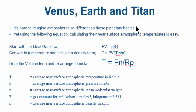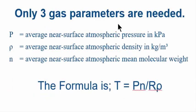So to get the near-surface average temperature of these three planets, or any other planet with a planetary atmosphere of over 10 kPa in pressure, all you need is three gas parameters. There we go: the average near-surface atmospheric pressure in kPa, the average near-surface atmospheric density in kilograms per cubic meter, and the average near-surface atmospheric mean molecular weight. That's it, that's all you need.